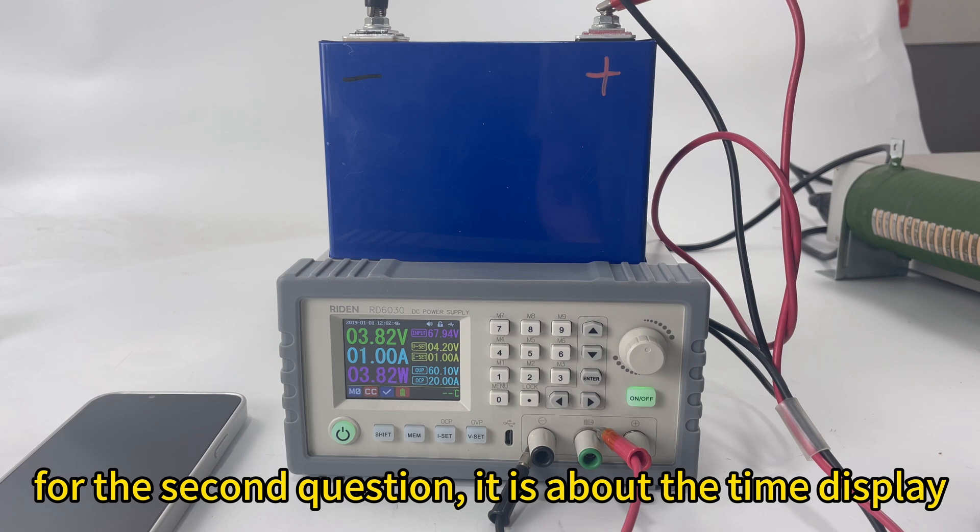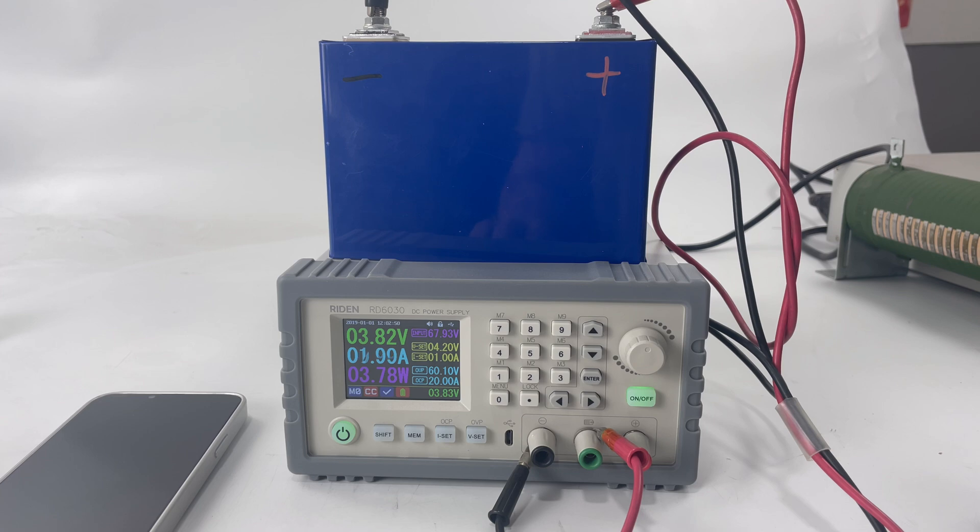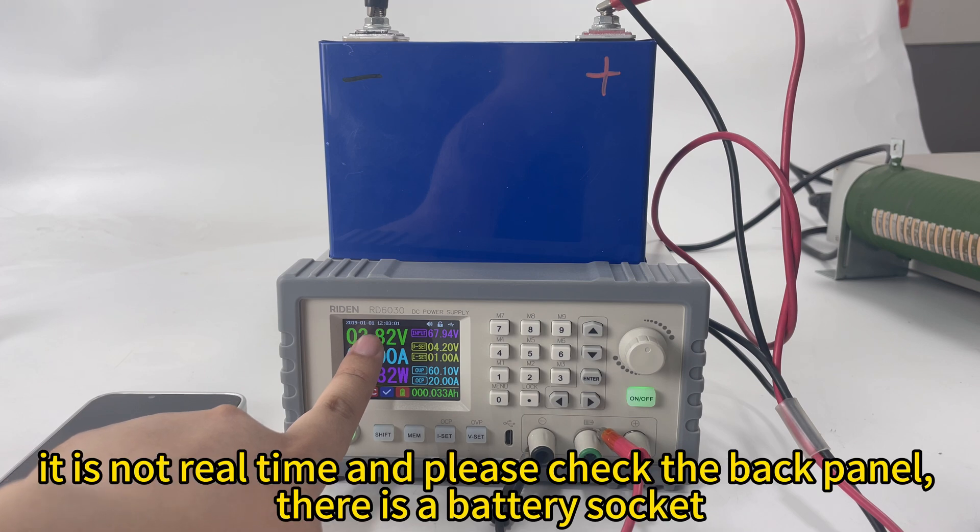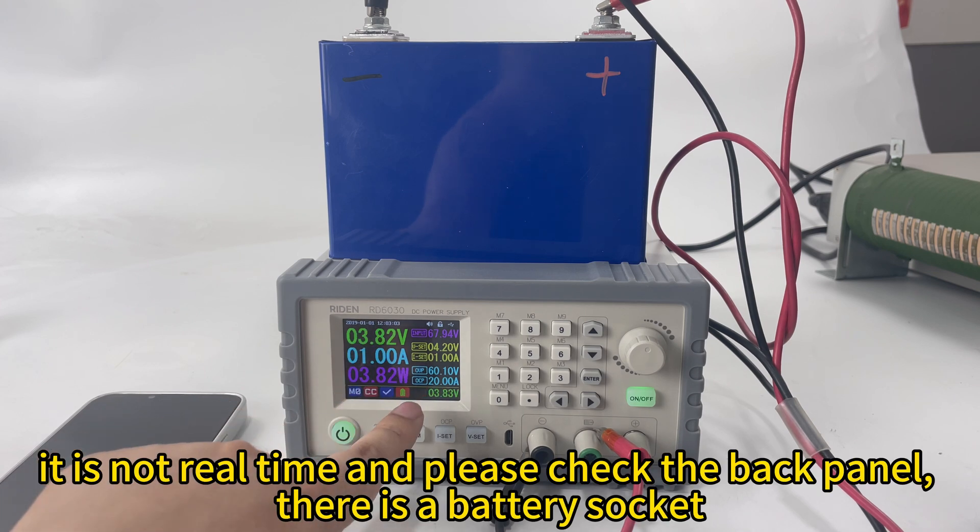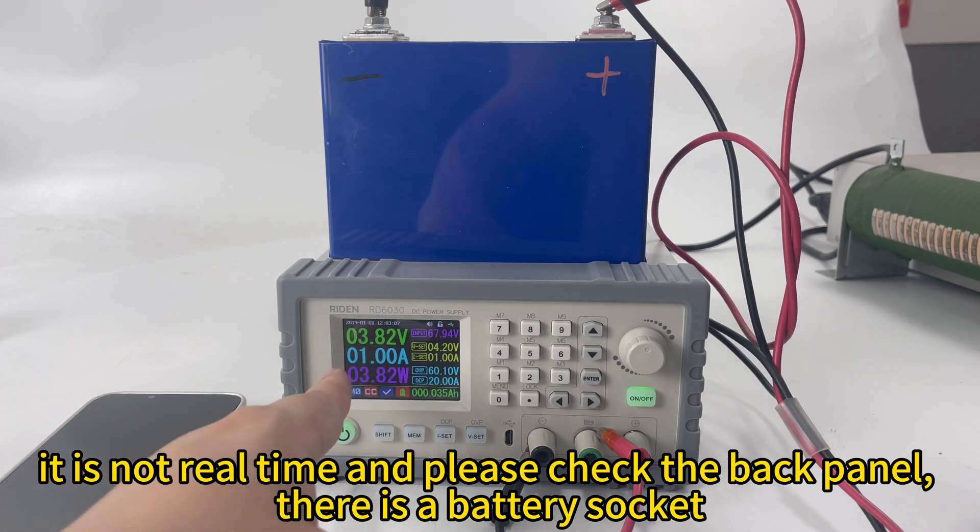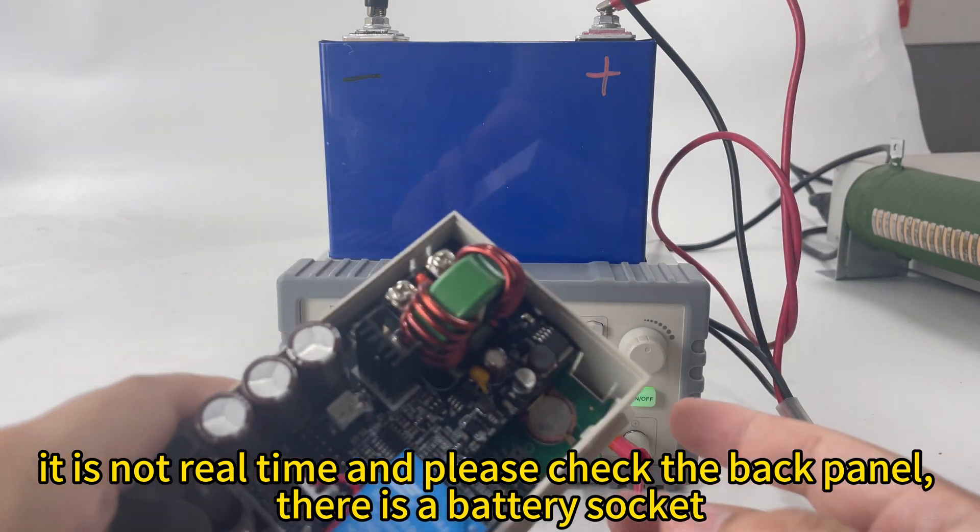For the second question, it is about the time display. You can see on the top left on the screen, it shows it is 2019 January 1st. It is not the current time.